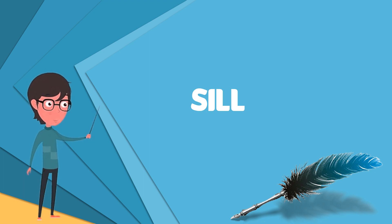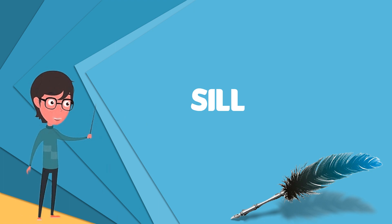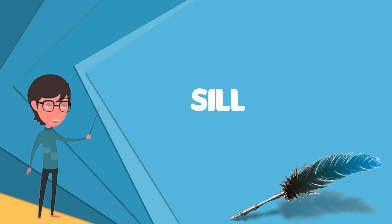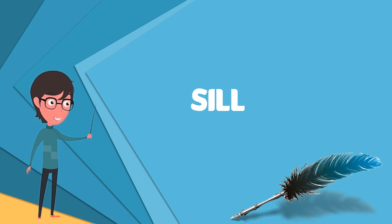Sills can be confused with solidified lava flows; however, there are several differences between them. Intruded sills will show partial melting and incorporation of the surrounding country rock. On both contact surfaces of the country rock into which the sill has intruded, evidence of heating will be observed. Lava flows will show this evidence only on the lower side of the flow.